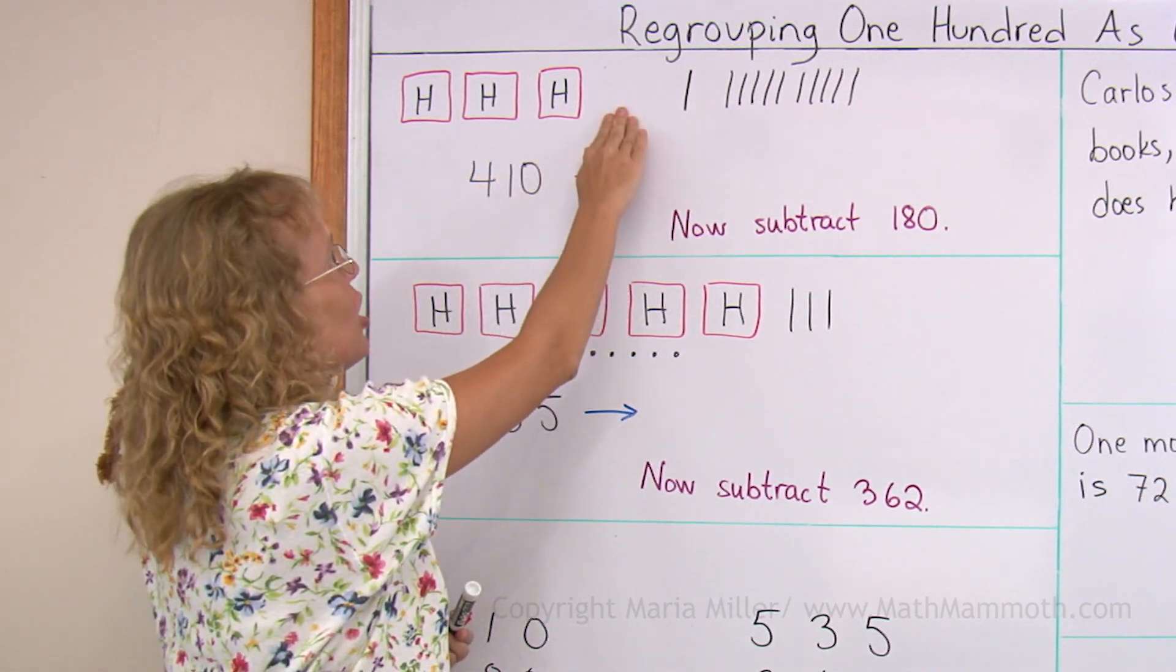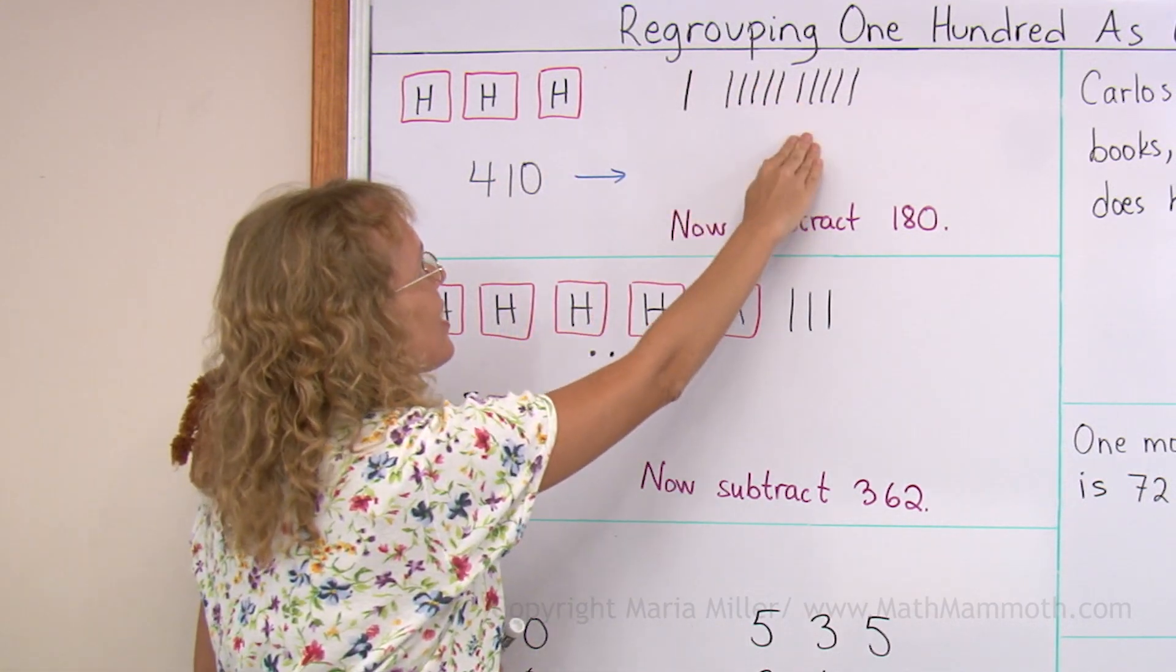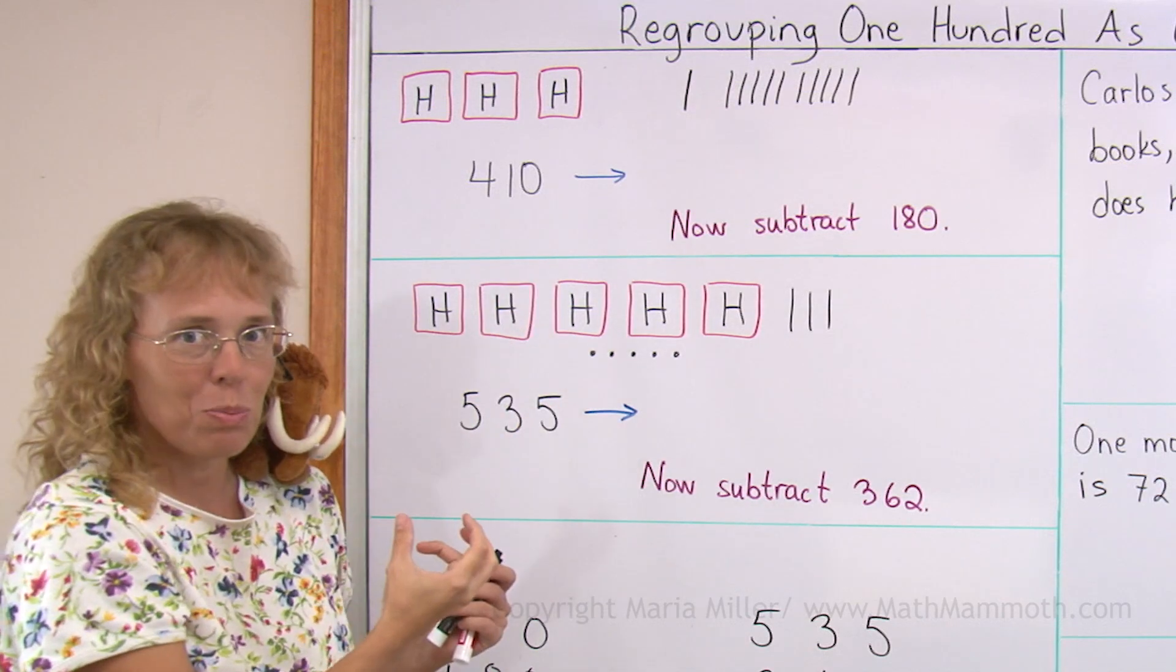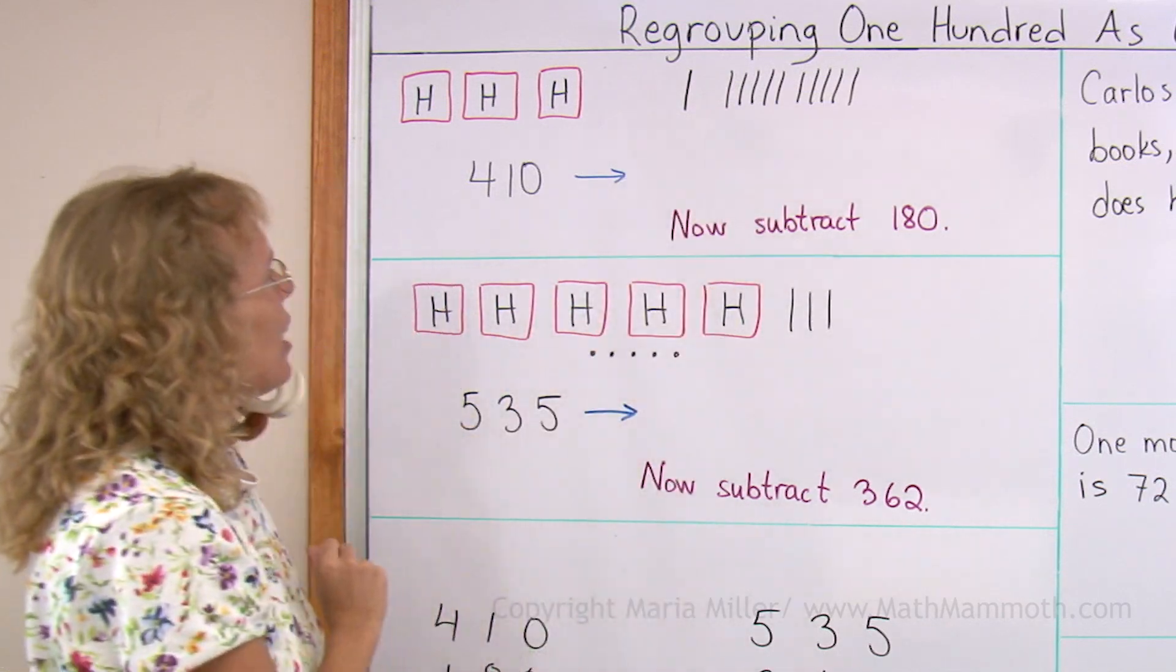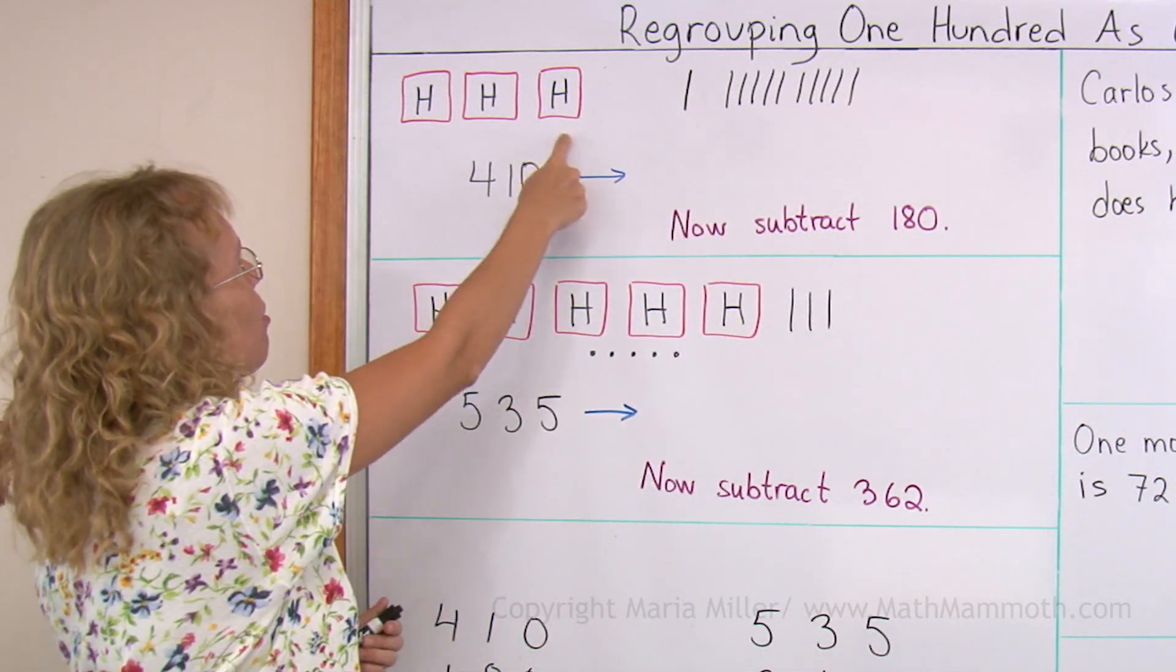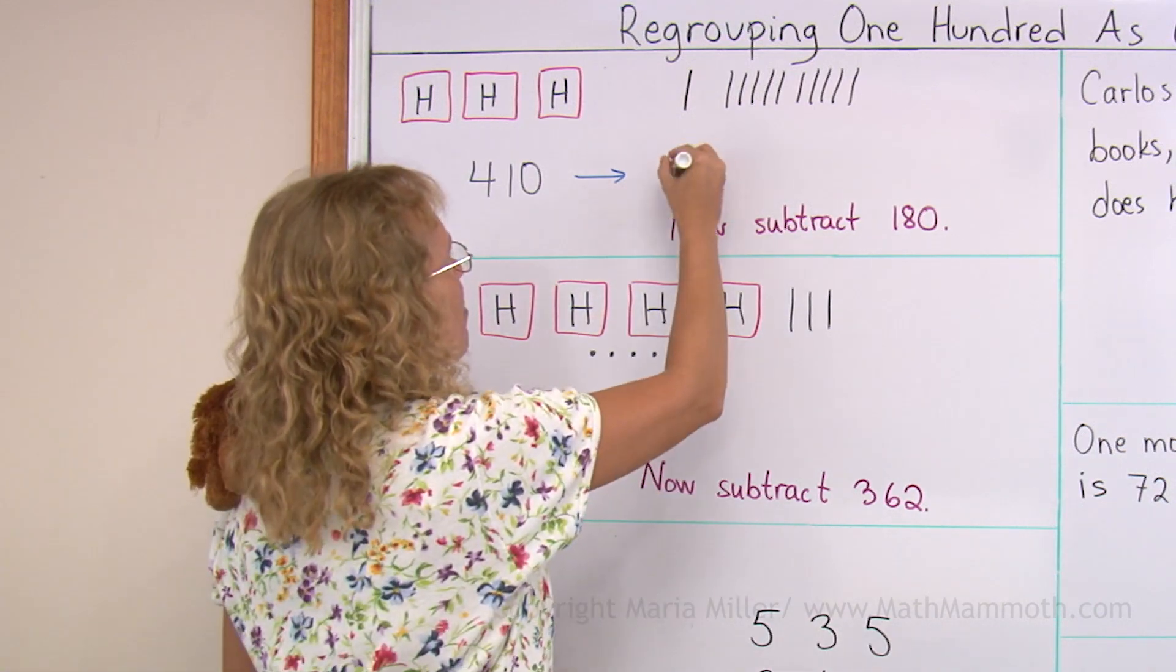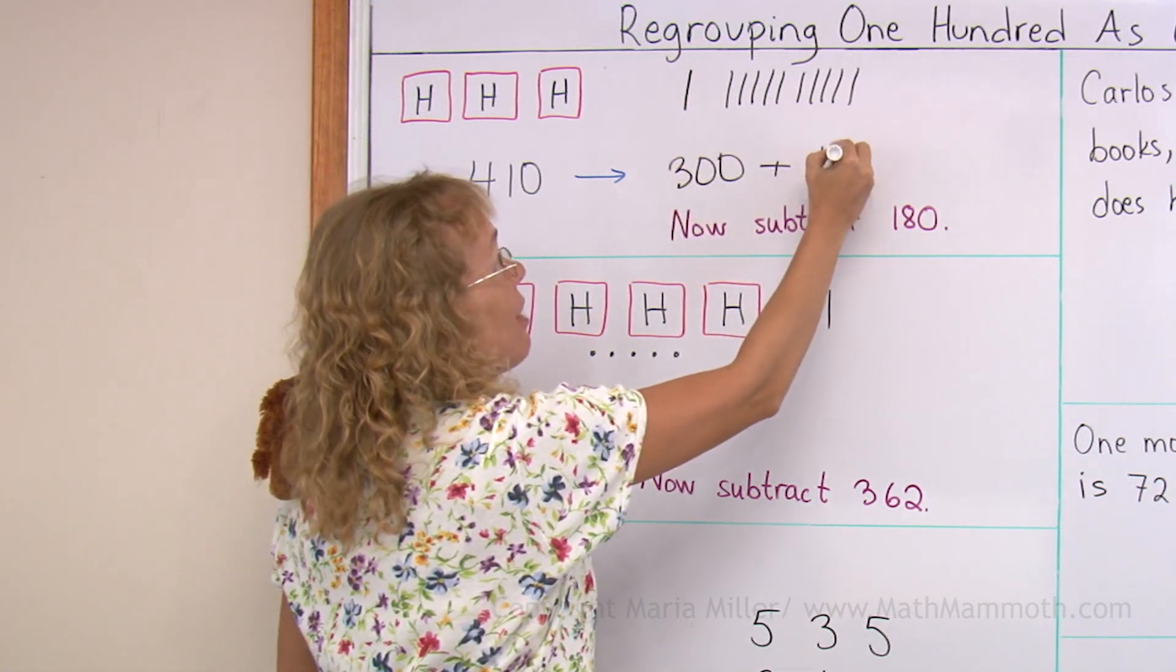Because this hundred got regrouped with the tens. It's no longer in the hundreds group. It's with the tens. And so what do we have now? We have only 300, right? And we have eleven tens.